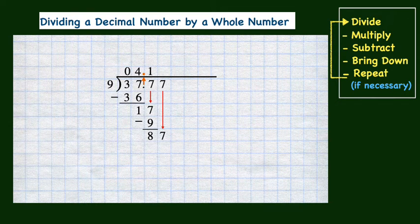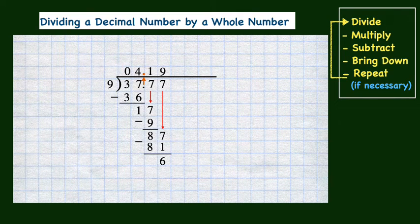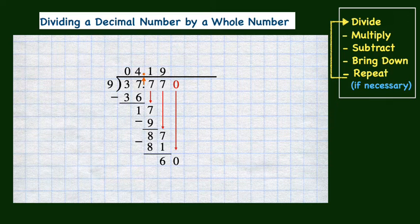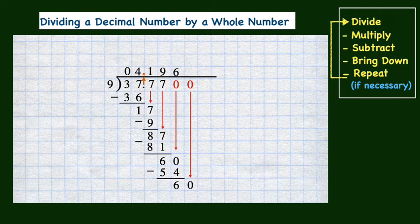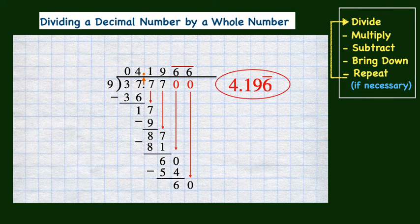So we need to bring down the next seven. Now we have 87 and nine divides into 87 nine times. 87 minus 81 is six. We don't have any digits left in the dividend, but we need to keep dividing because we have this remainder of six and no repeating digits in the quotient. So we'll add this zero and bring it down to get 60. Nine divides into 60 six times. After subtracting 54 from 60, we have the same remainder of six. If we add another zero and bring it down, we have 60 again. Nine divides into 60 six times. So now you can see that there will always be this repeating digit of six in the quotient, and because of this, we are done dividing. The line above the six is a symbol showing that this digit of six infinitely repeats.